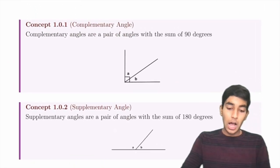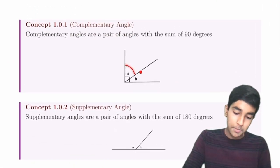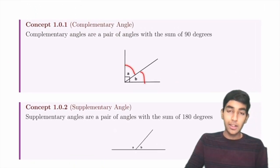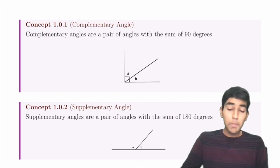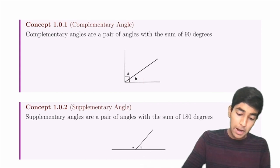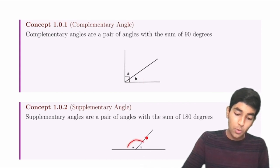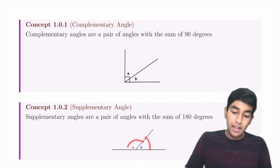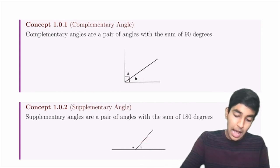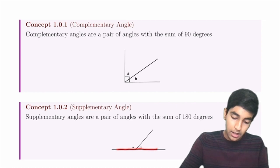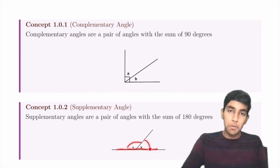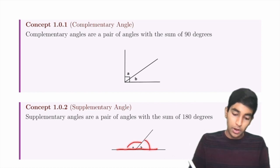Complementary angles are a pair of angles that sum to 90 degrees. Supplementary angles are a pair of angles that sum to 180 degrees, and this generally happens on a line. For example, these two angles are supplementary and sum to 180.